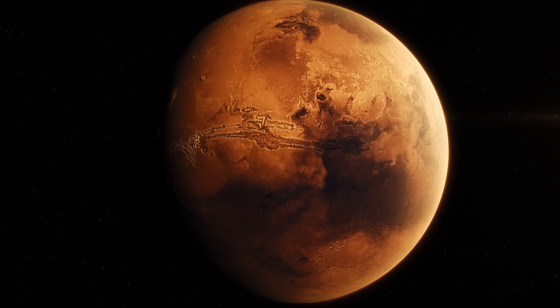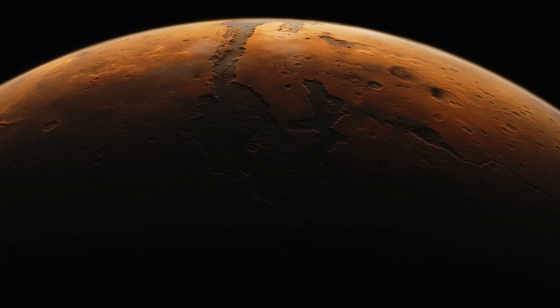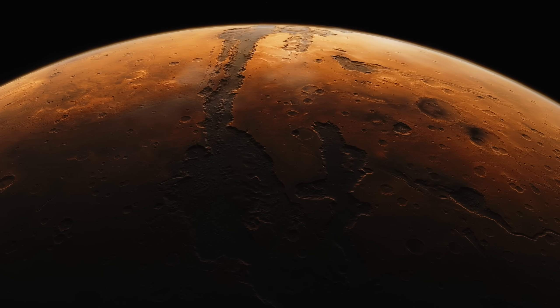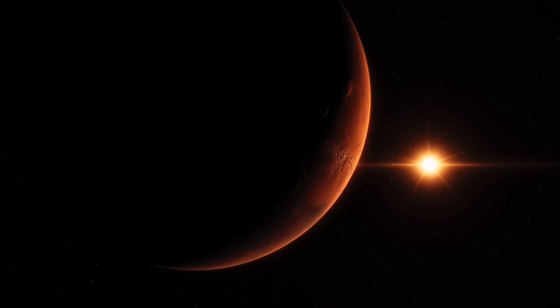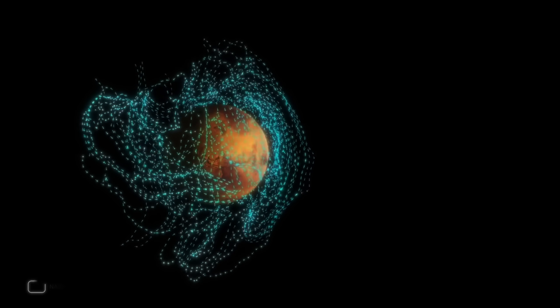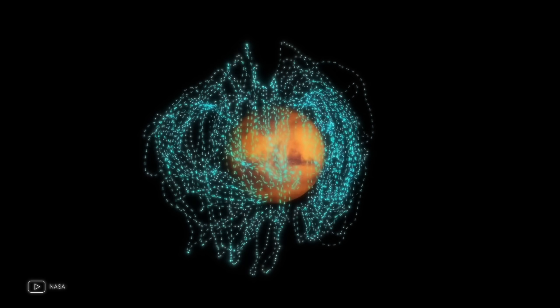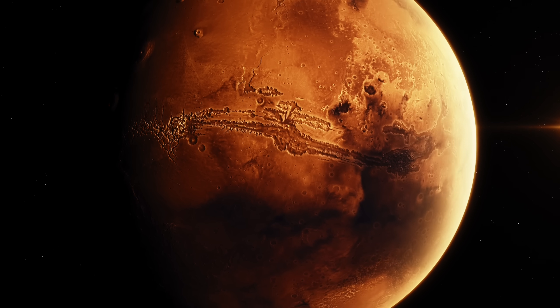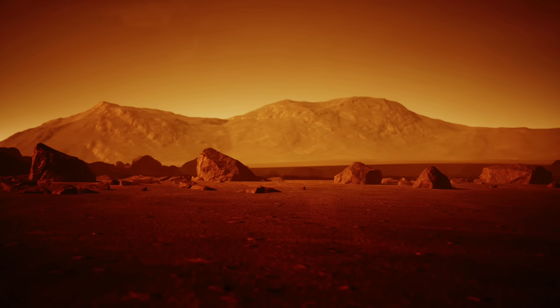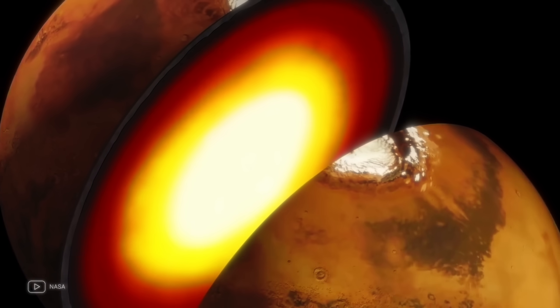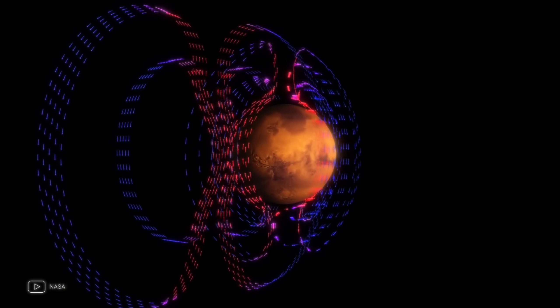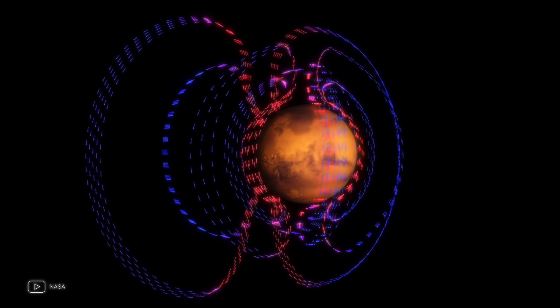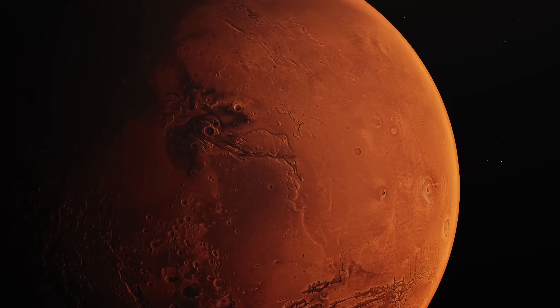the red planet, has long captured our imagination. With its towering volcanoes, deep canyons, and hints of liquid water, it is one of the most intriguing places in our solar system. But Mars also presents us with a mystery. Unlike Earth, Mars has a very weak and inhomogeneous magnetic field. This has serious implications for the planet's atmosphere and its ability to support life. Mars' magnetic field is not created by a dynamo in its core like Earth's. Instead, it is the remnants of magnetism trapped in the planet's crust from the time when Mars actually had a global magnetic field. Without a strong magnetic field protecting it, Mars'